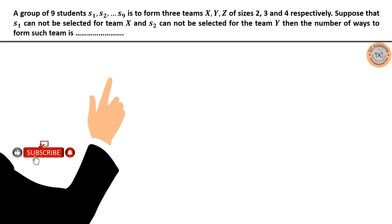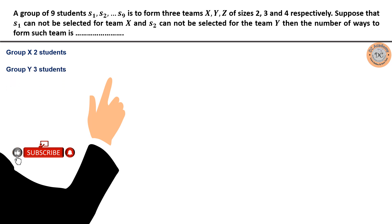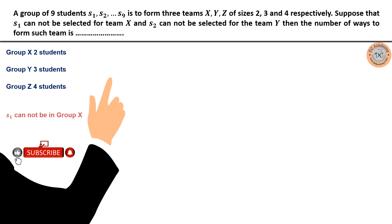The given conditions are: group X can have only two students, group Y having three, and group Z can have only four students, giving a total of nine. It is also given that S1 cannot be in group X and S2 cannot be in group Y.